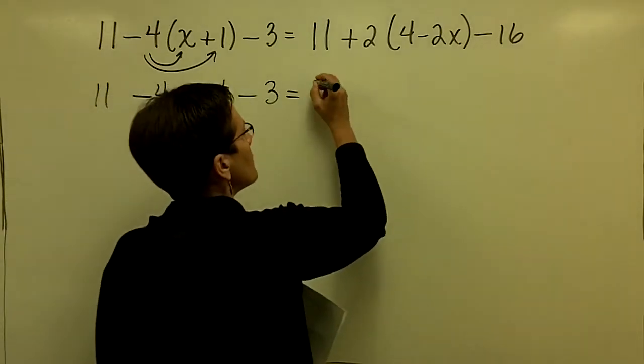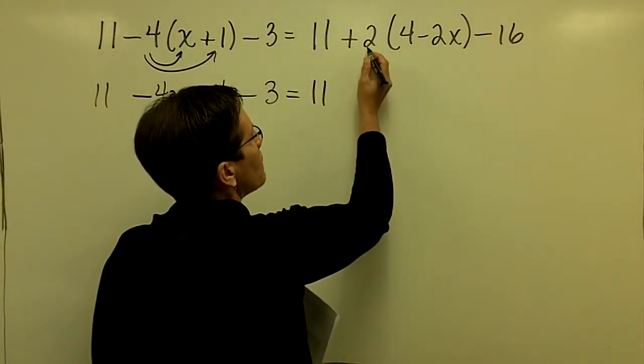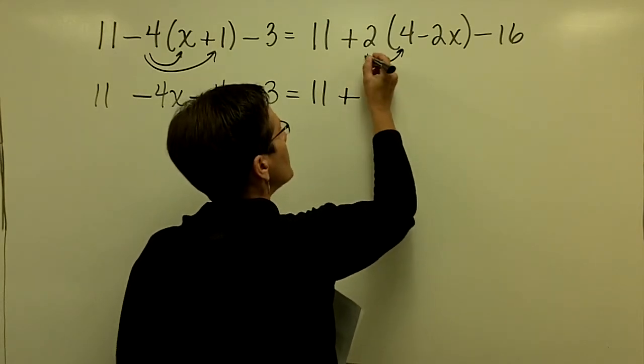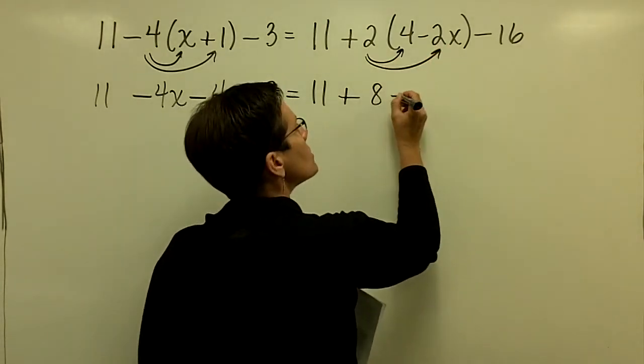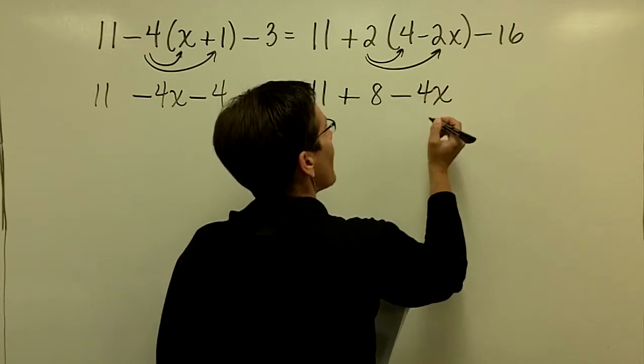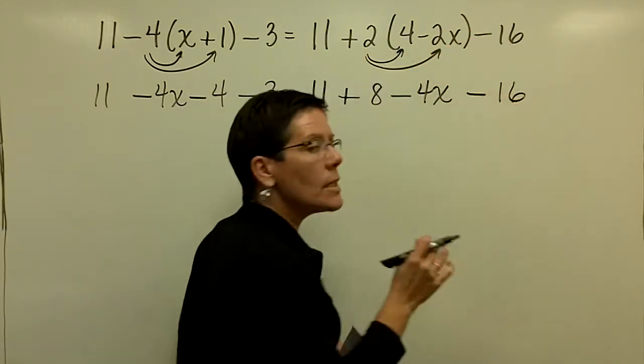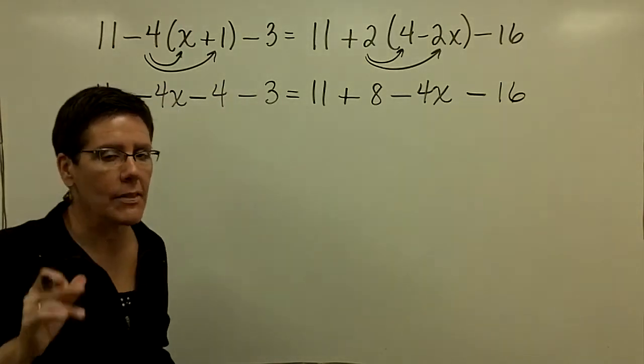Let's bring down this 11, and then we're going to take a positive 2 times a positive 4 and get a positive 8 here, and 2 times a minus 2 is a minus 4x. That's done. That 16 is just a lone constant. It's not got the parentheses around it.